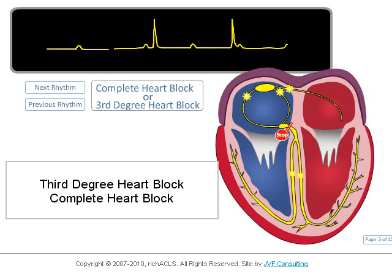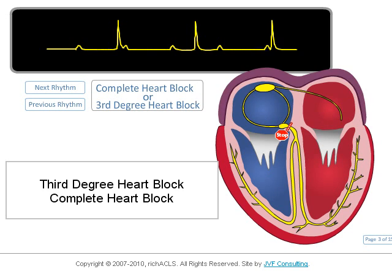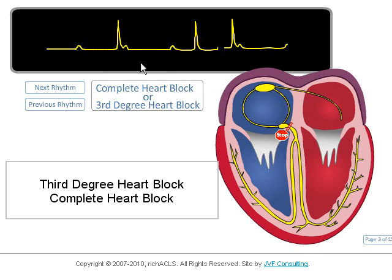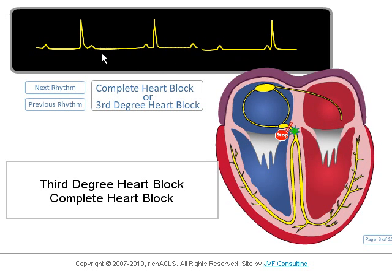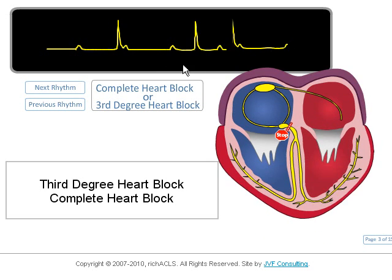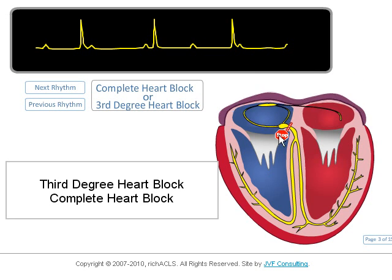Here is third-degree heart block, also called complete heart block. The unique characteristic of this rhythm is the dissociation of atrial and ventricular conduction — there is no PR interval. The atrium is firing at a different rate than the ventricles. The atrial rate here is about 60 and the ventricular rate is about 30. The AV node is damaged and cannot conduct impulses from the atrium to the ventricles.